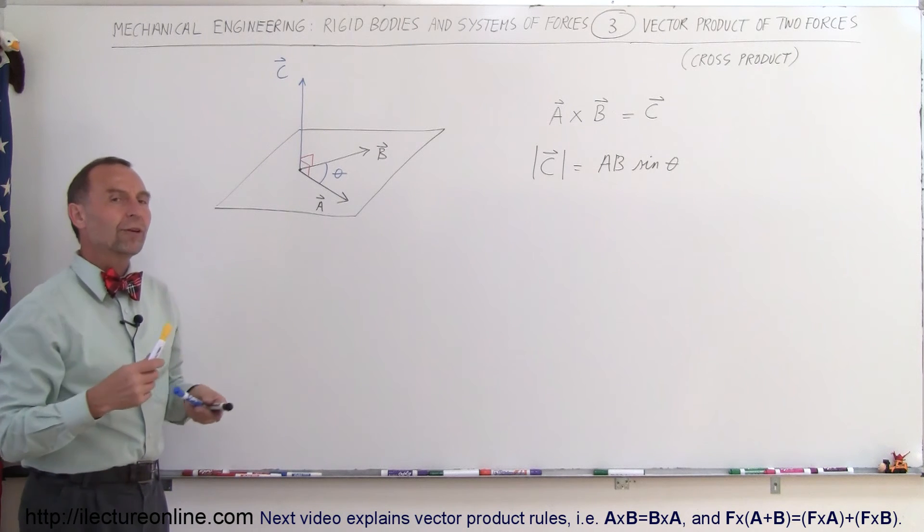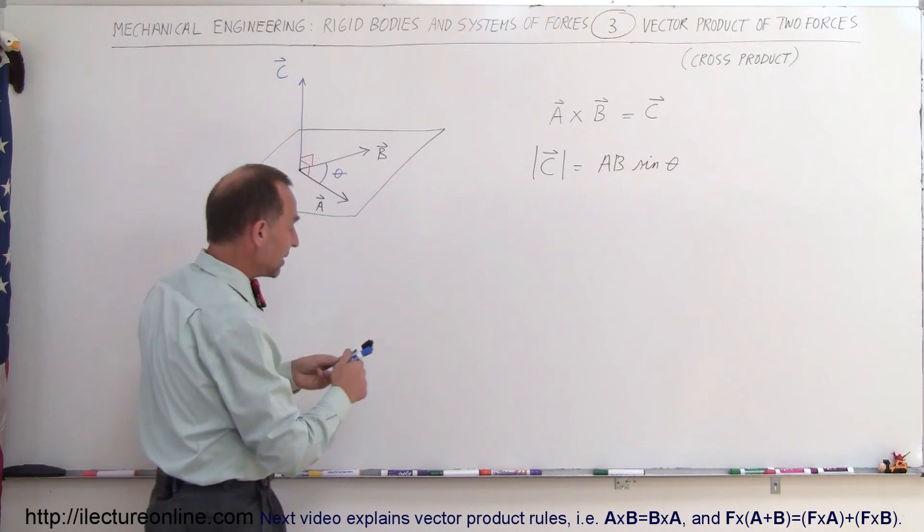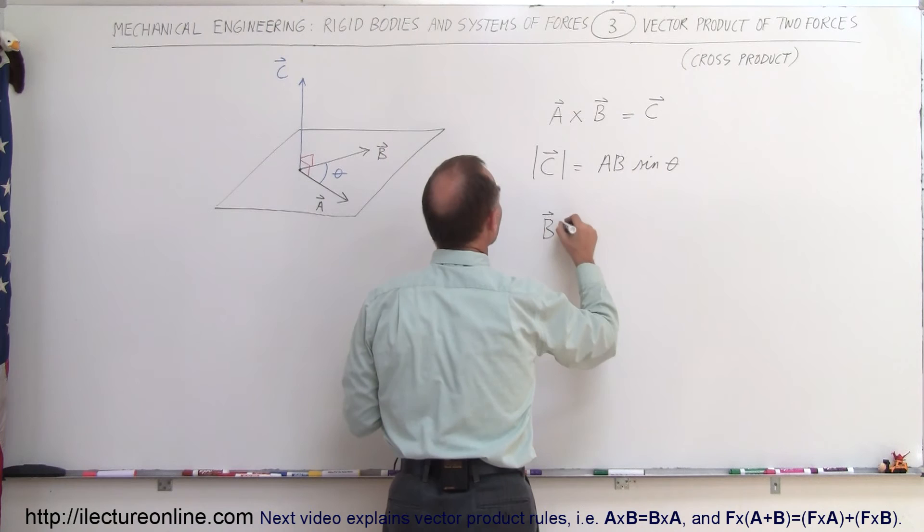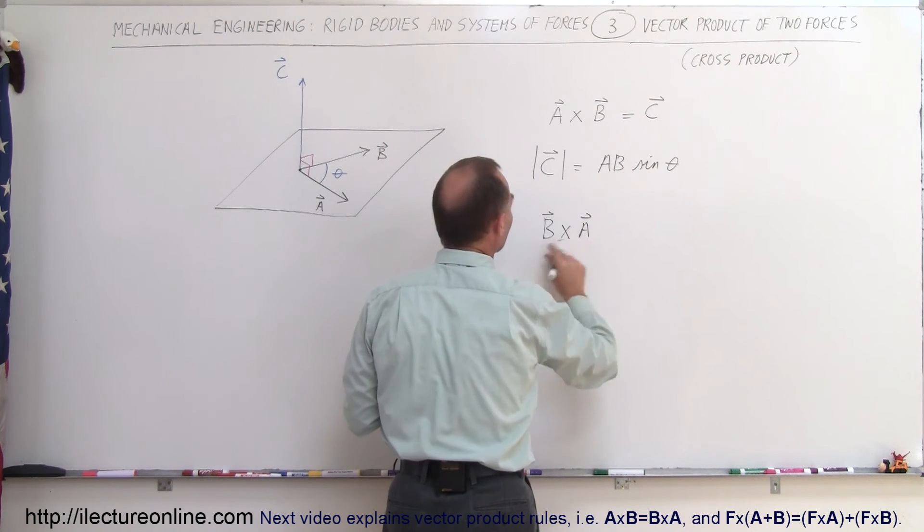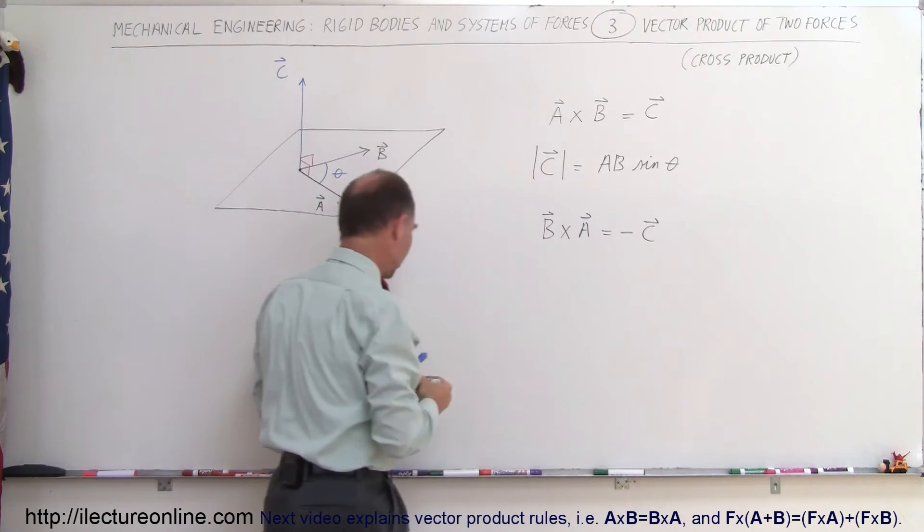What if you do the reverse? What if you do B cross A or the cross product or the vector product of B times A. What is that equal to? So if we go B times A, do the vector product in reverse, that is equal to the negative of the vector C.